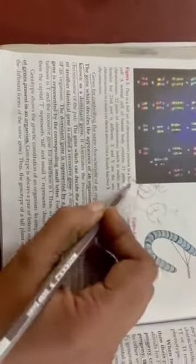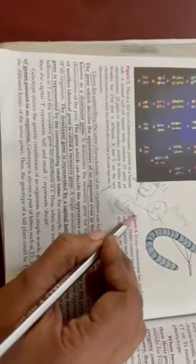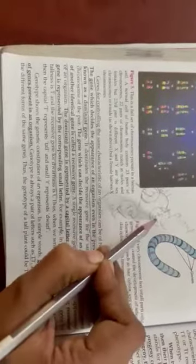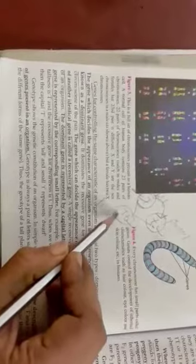This tall character will express itself so all produce F1 generation is produced that is all tall. And this tall dominant gene will not allow this recessive gene to express itself. So here generation is produced that is of all tall.